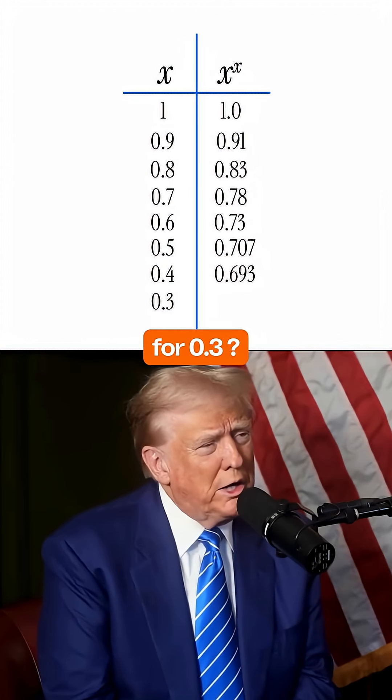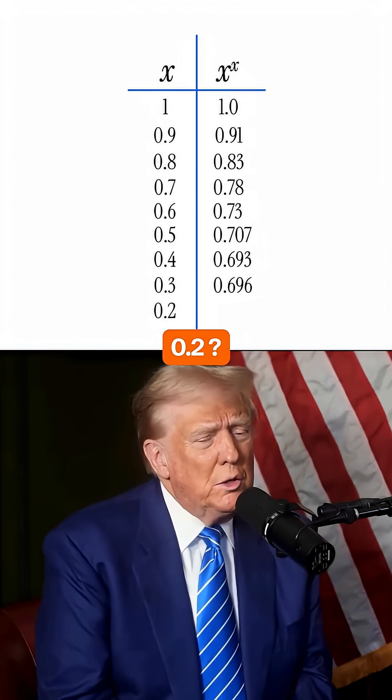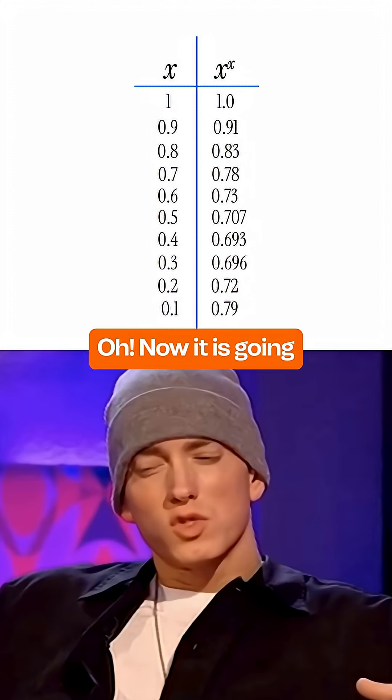Calculate for 0.3: 0.696. Oh, the value started increasing. 0.2 is 0.72, 0.1 is 0.79. Oh, now it is going towards 1.